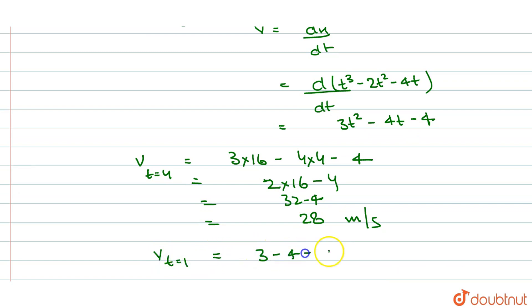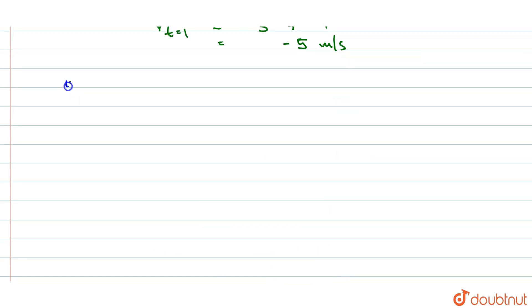3 minus 4 minus 4, that gives minus 5 meters per second. Now the third part was to find average acceleration. What is the average acceleration? Average acceleration is equal to v2 minus v1 upon delta t.